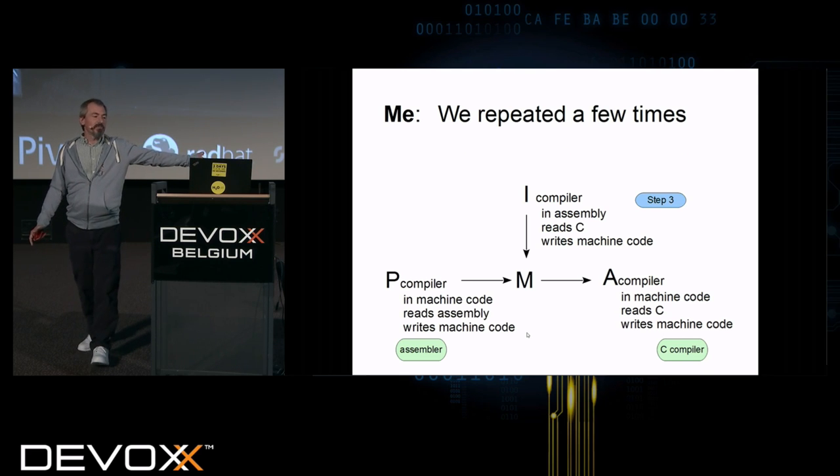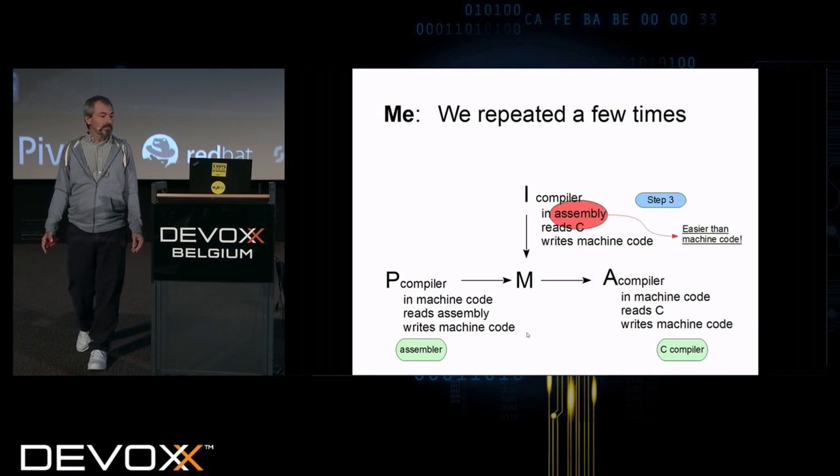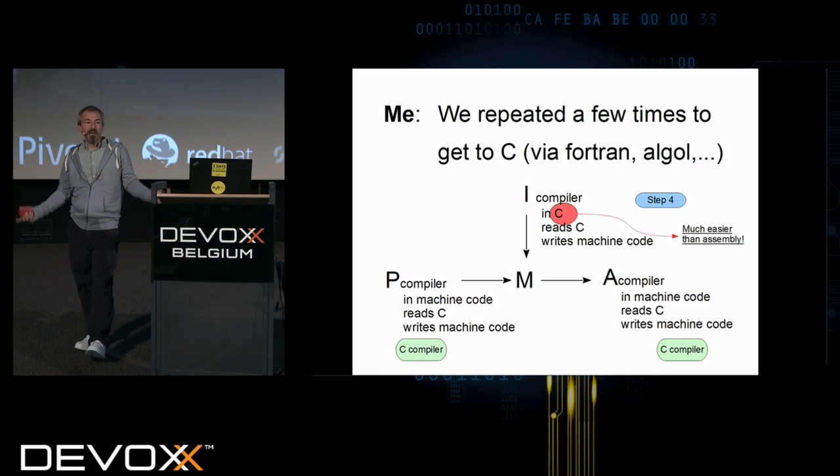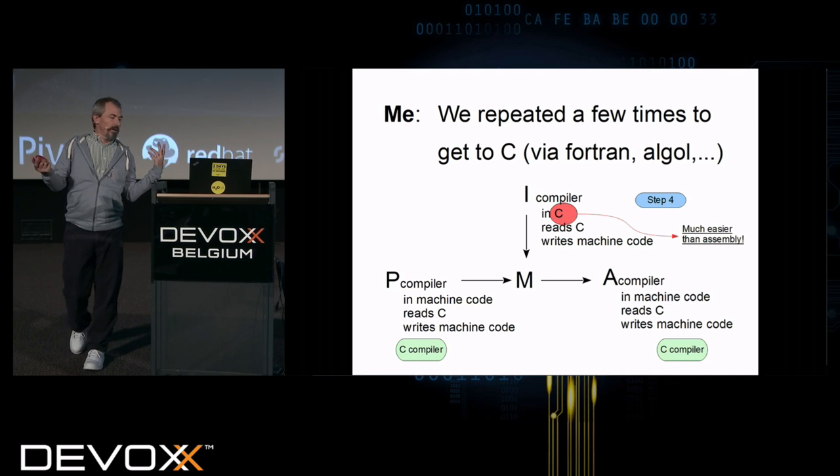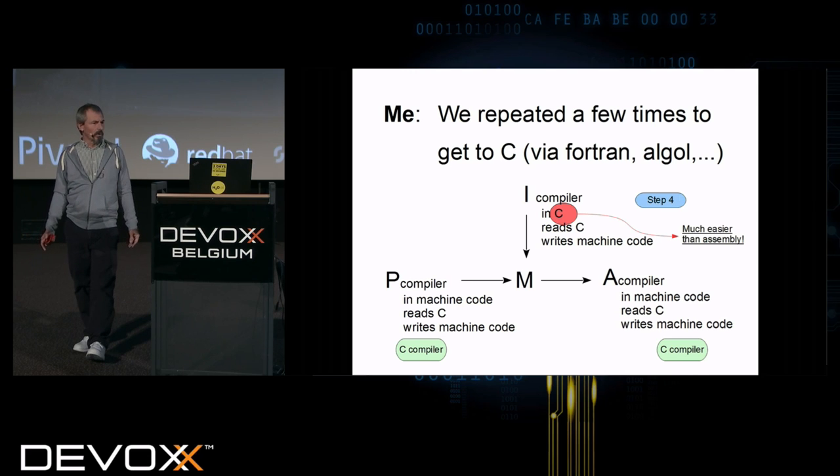We repeated that step a few times. So on the left, I have my assembler now. And on the top, I'm bringing in a compiler in assembly which reads C code, not assembly, and writes machine code again. And then I get out a C compiler. Because it's written in assembly, it's much easier to write than the one in machine code. And because it's easier to write, I can solve a harder problem. In particular, I can write a compiler that reads C code, a much harder language to write a compiler for than assembly. And we repeated this step a few times to get to C, through some in-between steps including things like Bliss and Forth and Fortran and Algol.